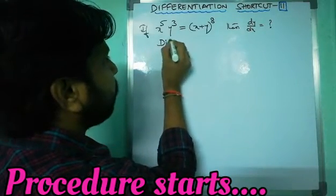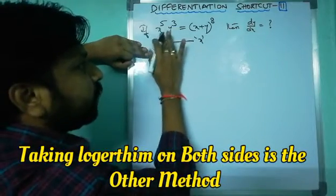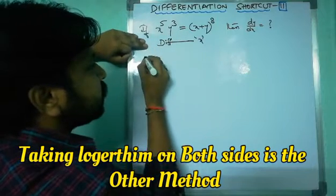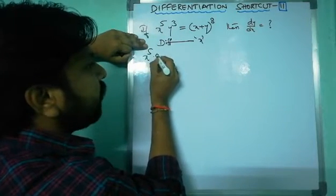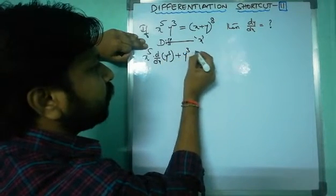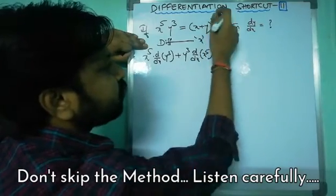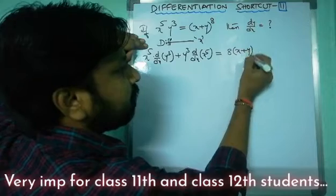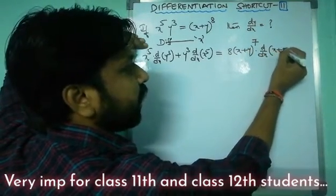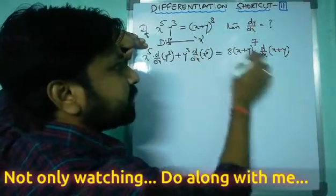Whenever this kind of question appears, you apply differentiation with respect to x. The left side is a product (uv form) with x to the power of n, so apply the uv rule: u times d/dx of y cubed plus y cubed times d/dx of x to the power 5. The right side uses the power rule — 8 times (x+y)^7 — and then the chain rule gives the inner derivative d/dx of (x plus y).